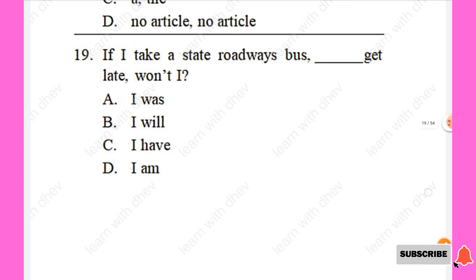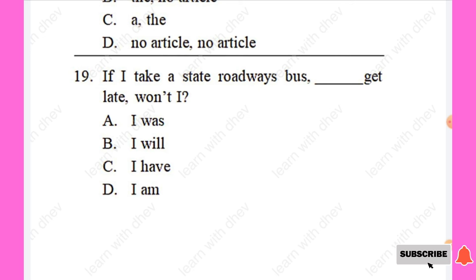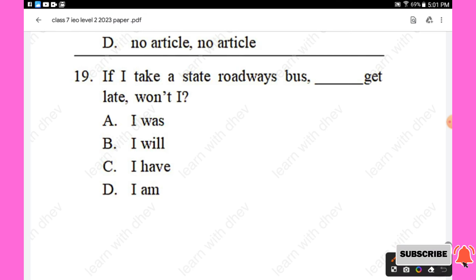Question 19: If I take a state roadways bus, — get late, won't I? Options are: I was, I will, I have, I am. The right answer is 'I will' — If I take a state roadways bus, I will get late, won't I? Option B is the right answer.